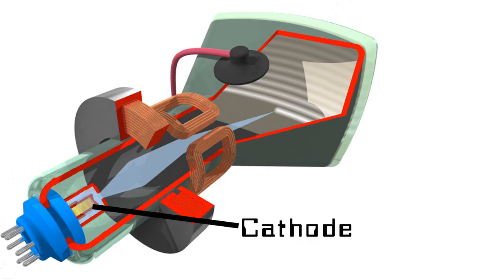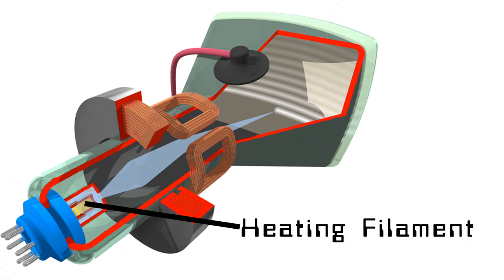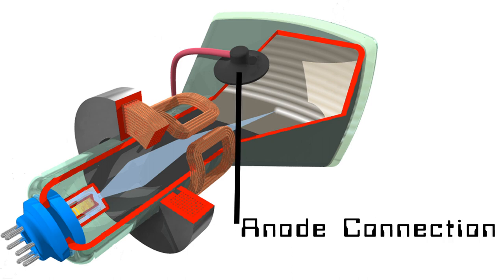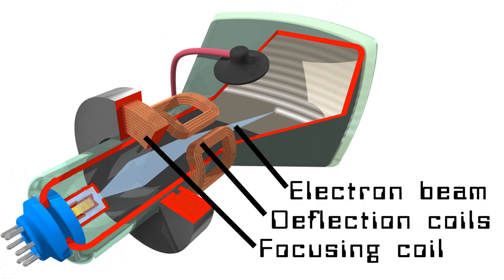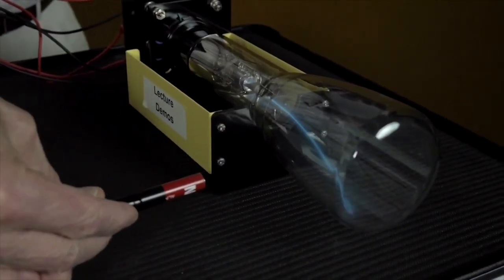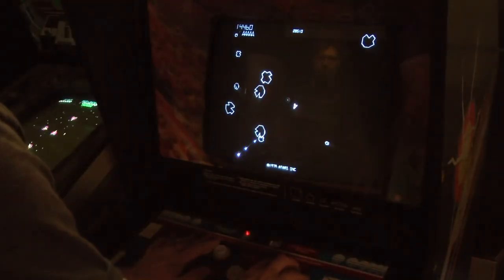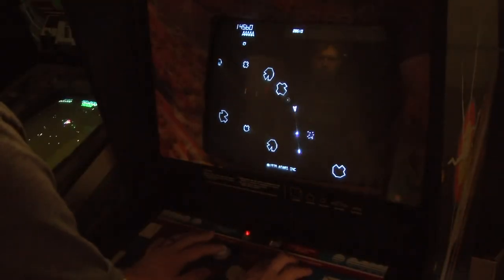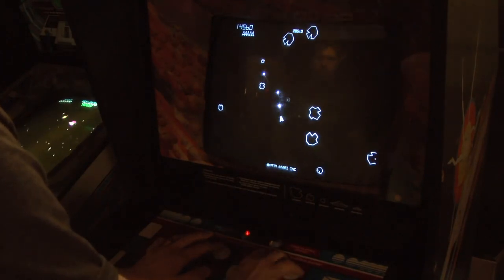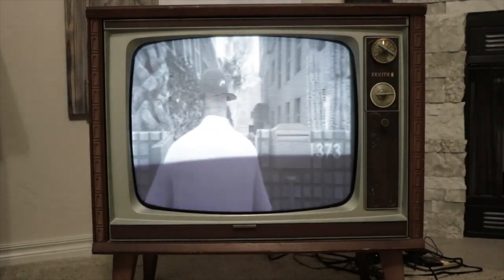An electron gun contains a cathode, which is a negatively charged electrode. The cathode is heated to emit electrons, which are drawn away by a positively charged anode. These electrons are focused into a beam using a focusing coil and directed onto the screen using magnetic deflection. In the case of a vector screen, the beam is moved to draw shapes. In the case of a raster screen, like a TV, it scans from top to bottom continuously to form an image.